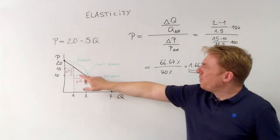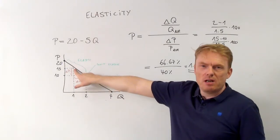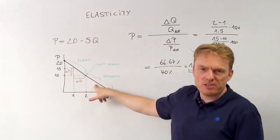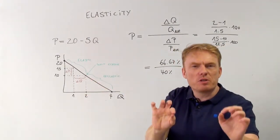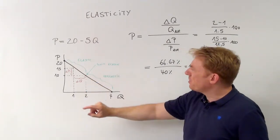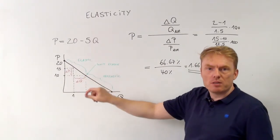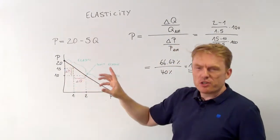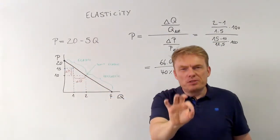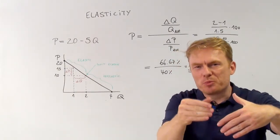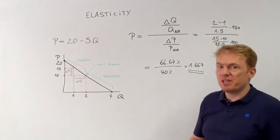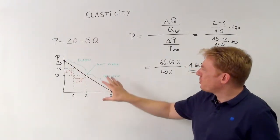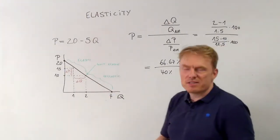At this point we had a price elasticity of 1.67, which is strictly greater than 1. If we calculated the price elasticity at lower points on the demand curve, it would be strictly less than 1. Here, right in the center, the price elasticity equals exactly 1 — this is called unit elastic. The demand function is elastic in the upper region, meaning quantity demanded goes up more than the price goes down, everything in percent as a relative change. The lower region is inelastic, and there is one unique unit elastic point.